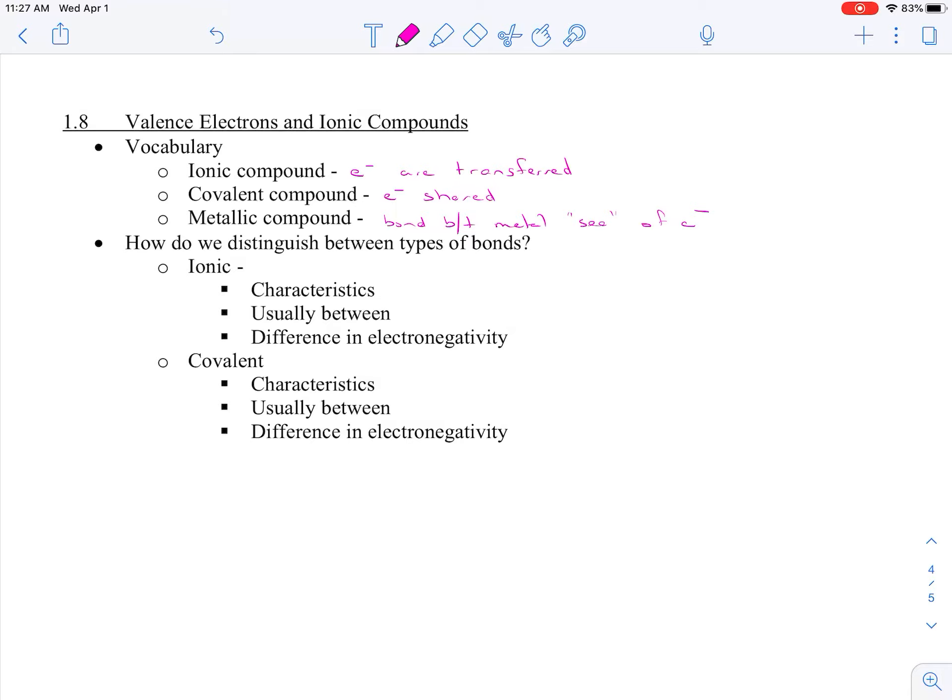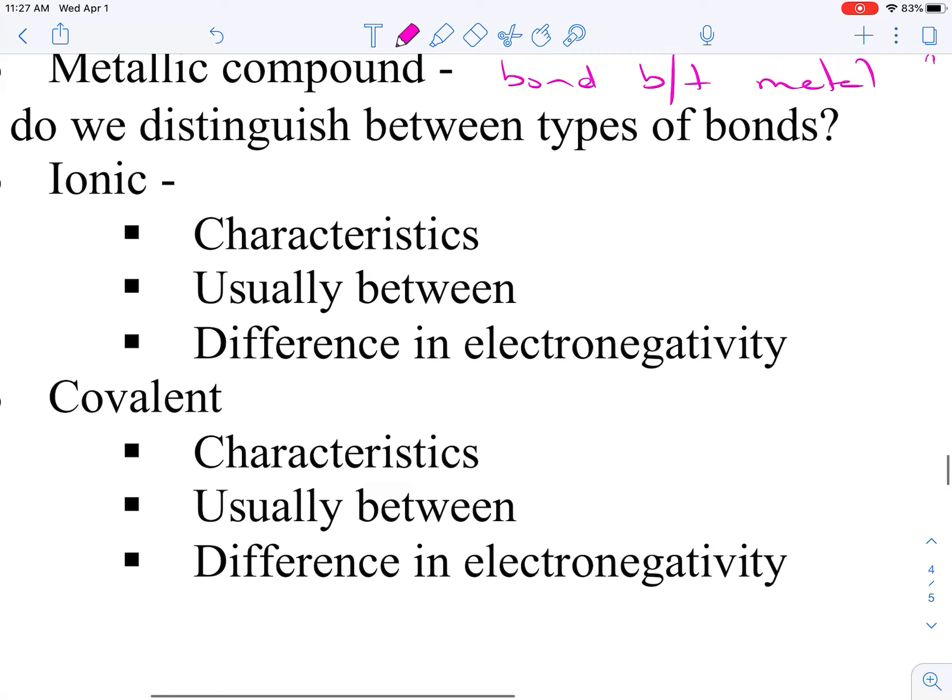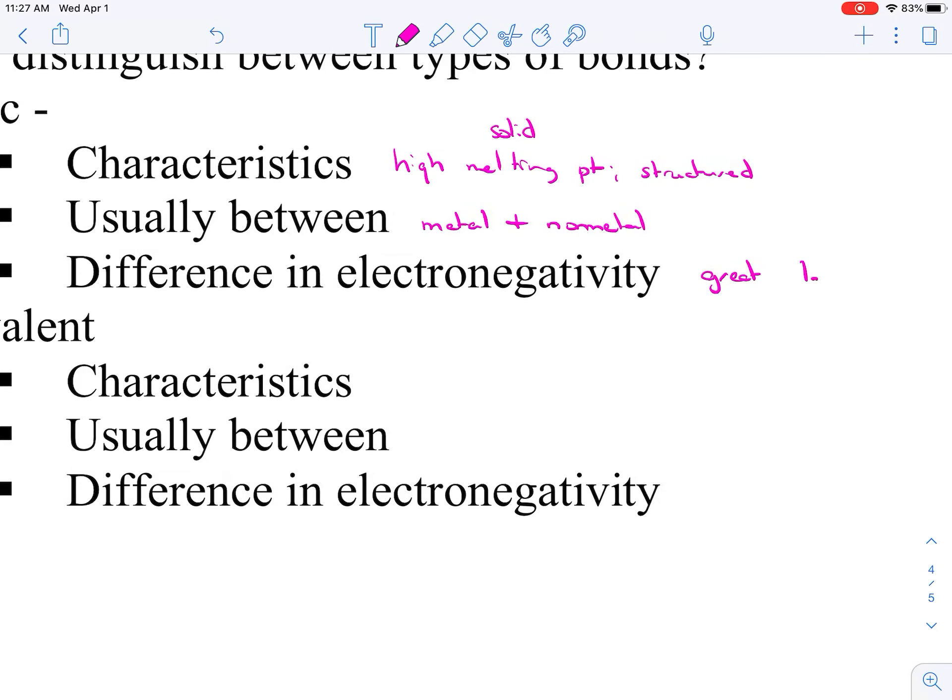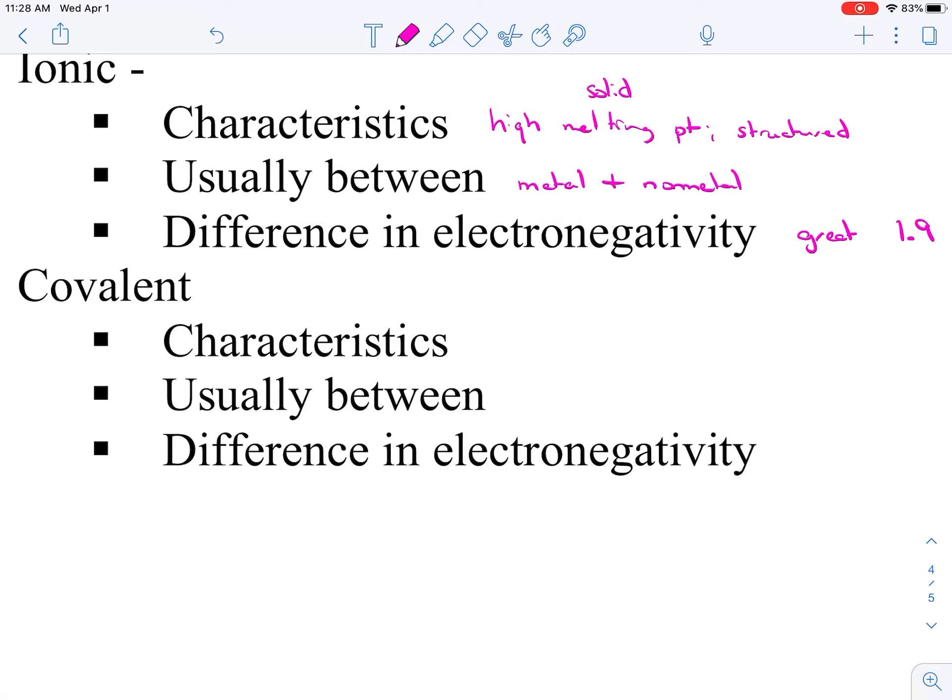So how do we distinguish between types of bonds? Our ionic, again some characteristics of them, they have a high melting point. We could also say a high boiling point. Remember we talked about salt having a melting point of like 800 degrees Celsius. High melting point, they tend to be structured, and we're talking about in their solids, they also tend to be solid at room temperature. They're usually a bond between a metal and a non-metal, and the difference in electronegativity is usually great. Depending on the book you're reading or the source, it's usually around 1.9. The difference in the electronegativities is around 1.9 or greater.